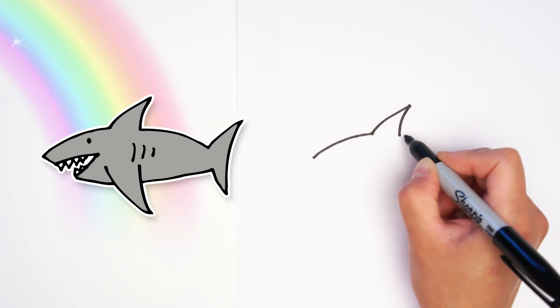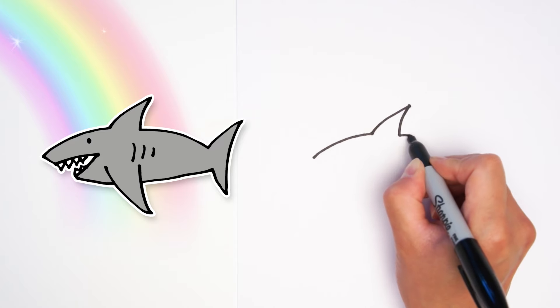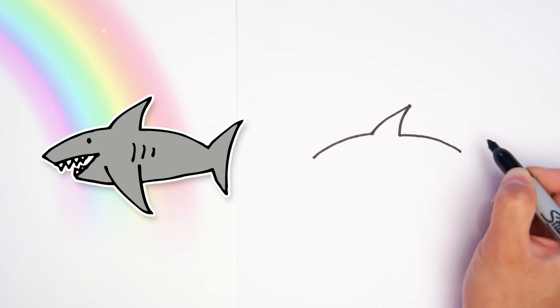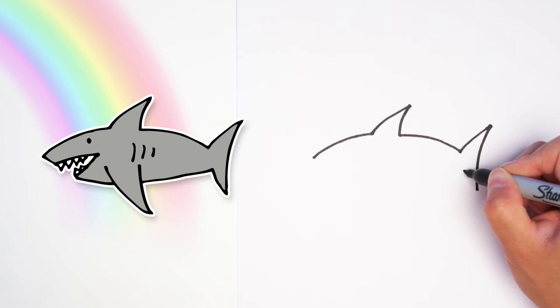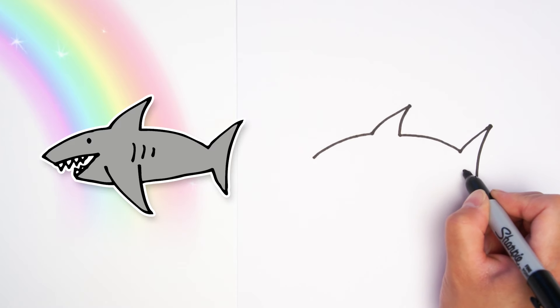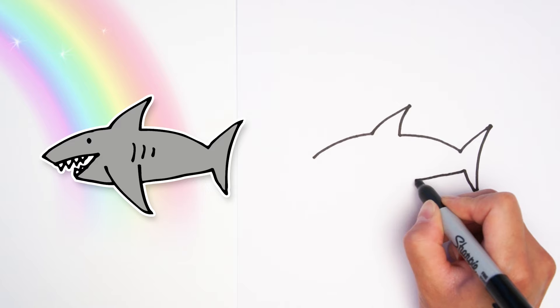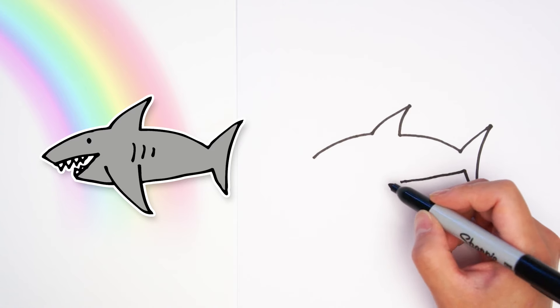Back down and then curving back down towards the tail and now going up and making the back tail and down farther and a line back towards the body and then another curved line for the bottom of the body going here all the way under towards the middle.